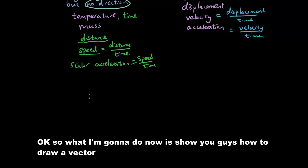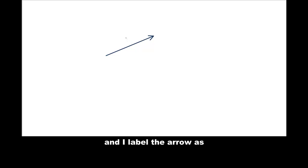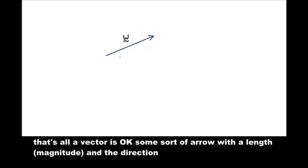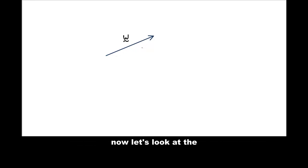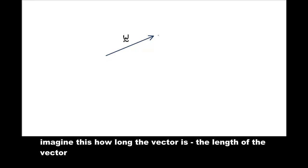So what I'm going to do now is show you guys how to draw a vector. So what do vectors look like? Well, vectors are pretty much just arrows. So if I draw an arrow like this, and I label the arrow as let's say w with a tilde underneath it, that's all a vector is. Some sort of arrow with a length and a direction. Now let's look at the length or I guess you can say magnitude of the vector and the direction separately. So the magnitude of the vector, you can imagine this as how long the vector is.